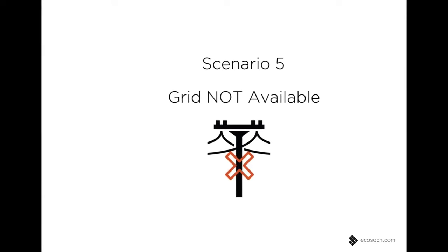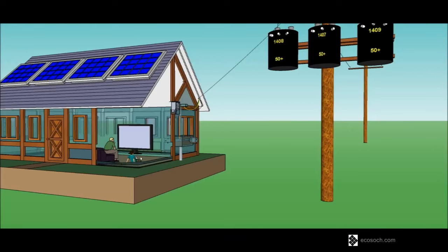In the absence of the grid, that is during a power cut, the solar inverter shuts down. This is for the safety of the staff working on the grid for maintenance.